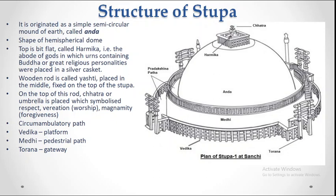The Stupa is associated with the death of the Buddha — that is, his Maha Pari Nirvana. On the Harmika, there is a rod called the Yashti. In the Yashti, there are three layers of umbrella which are called the Chhattr.